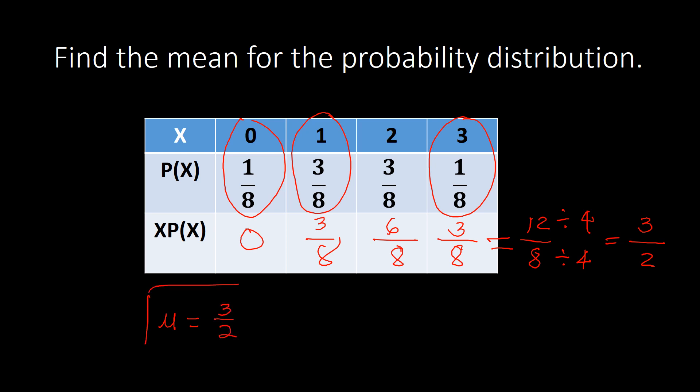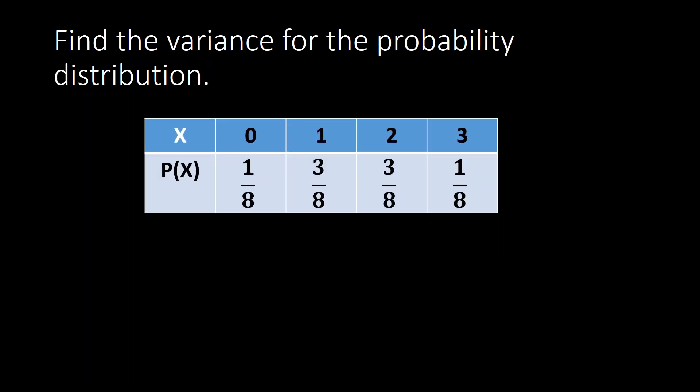That gives us three-halves as our mean. When you use the tabular method for finding the mean, you add up the last row, and that will be your mean. Next, we go on to finding the variance of the probability distribution using the same distribution.